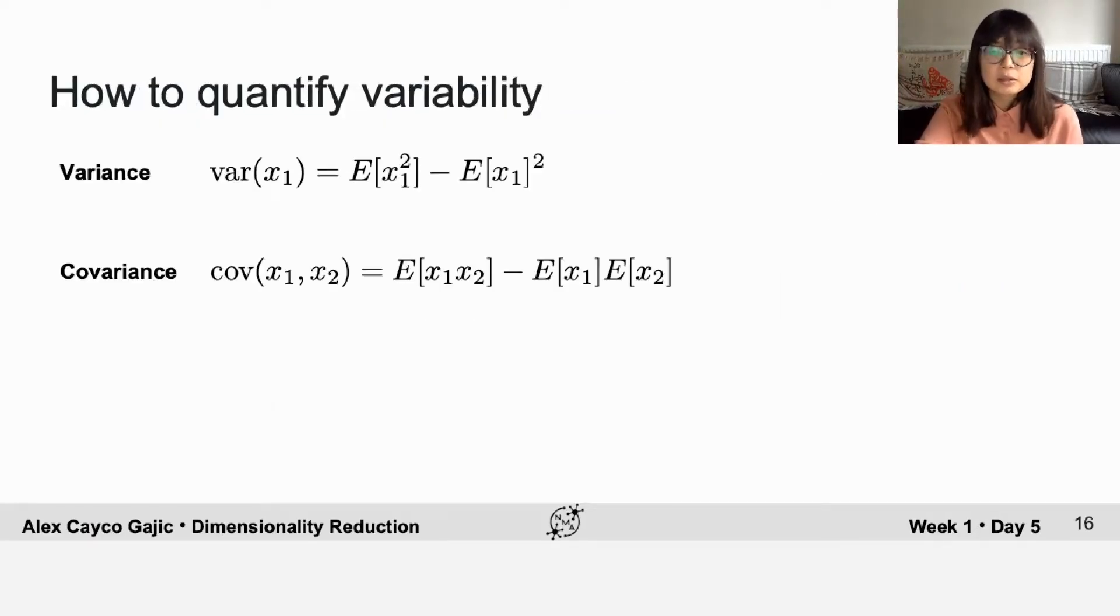Mathematically, these are defined by the following equations. The covariance of x1 and x2 is the expectation of the product of x1 and x2 minus the product of the expectations.